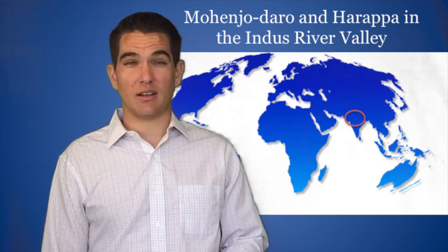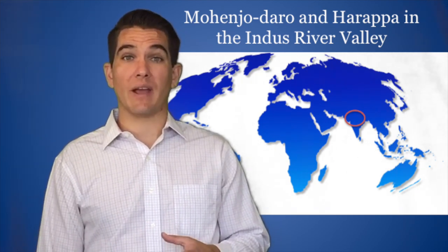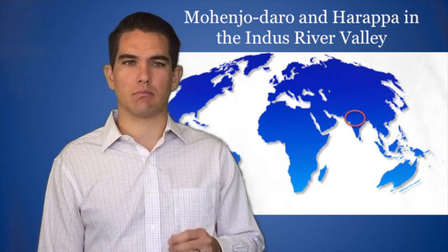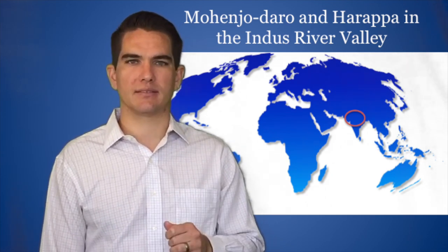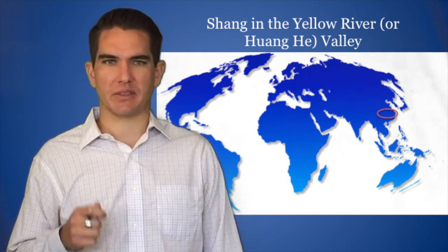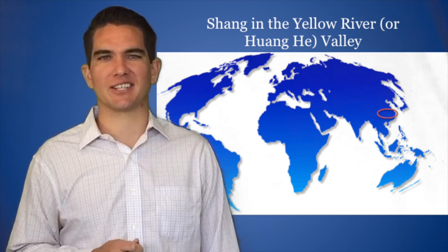In South Asia, along the Indus River Valley, we have the Indus River Valley civilization. They built two large urban centers there called Mohenjo-Daro and Harappa. Chinese civilization begins along the Yellow River Valley with the Shang Dynasty about 2600 BCE.